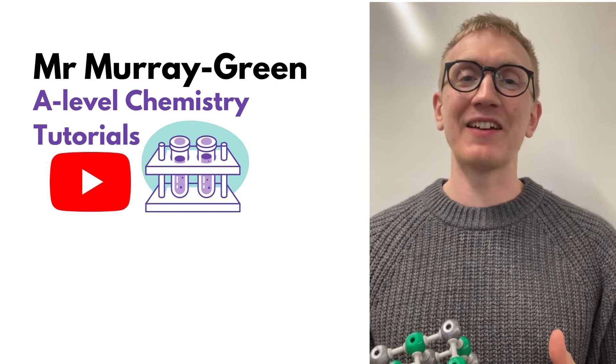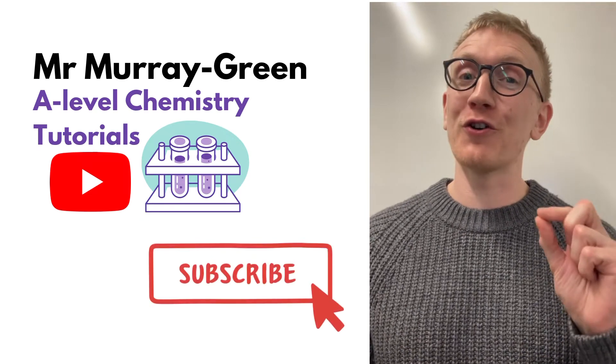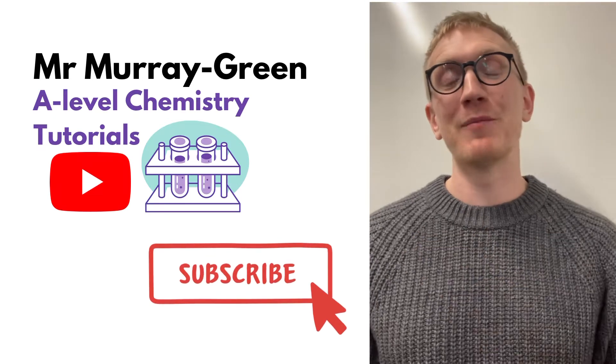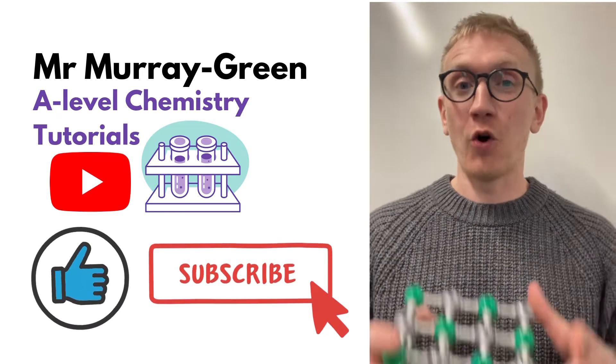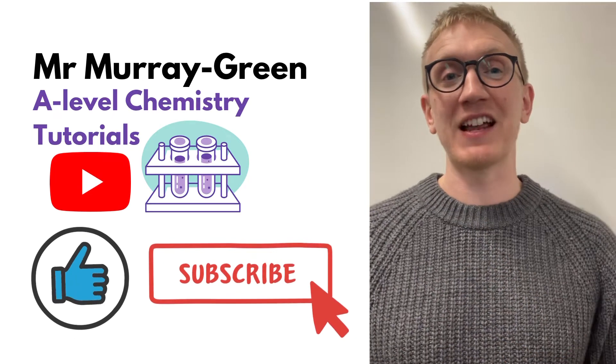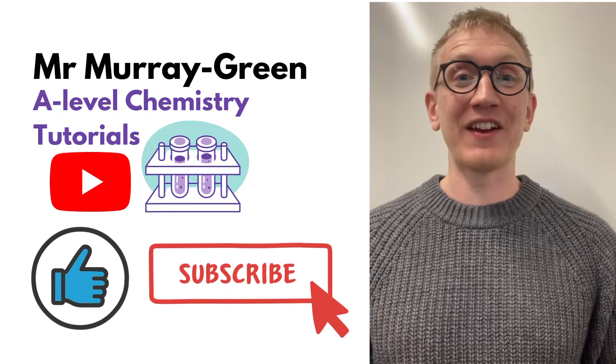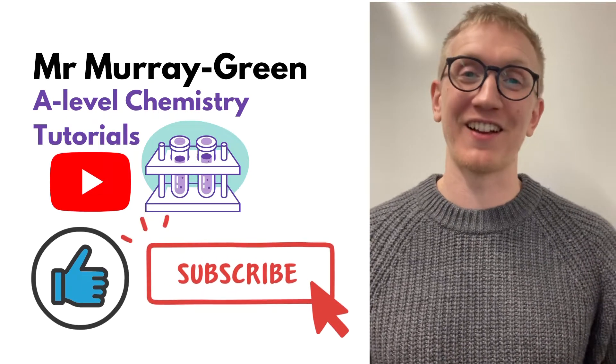But what changes a little bit at A-level is perhaps the definition that you have to use in the exam and also the dot and cross diagrams become a little bit more complicated. So in this tutorial I'm going to take a look at all the upgrading that you do from GCSE to A-level for the giant ionic lattice structure, and by the end of it you should have more confidence when it comes to those more complicated dot and cross diagrams.